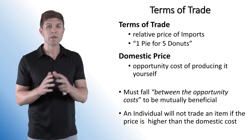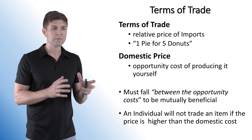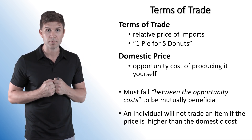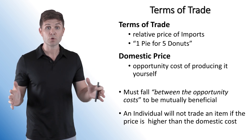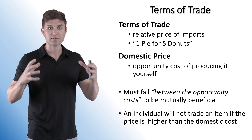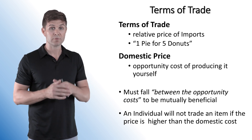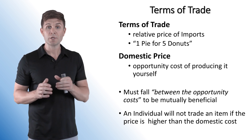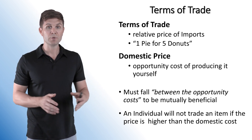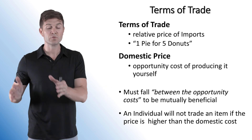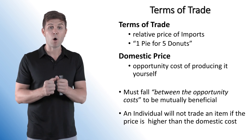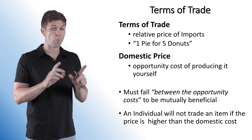The big part of this video is terms of trade — the relative price of imports. If I trade one pie for five donuts, that's the terms of trade: every time I want one pie, I give five donuts. The domestic price is the opportunity cost of producing it yourself — if I can produce one pie or three donuts, those three donuts are also my domestic cost. When it comes to terms of trade, it must fall between the opportunity costs. An individual will not trade if the price is higher than the domestic cost — I won't trade if I can produce it cheaper myself.